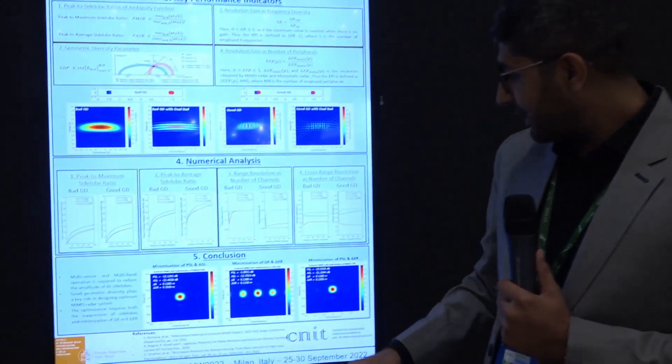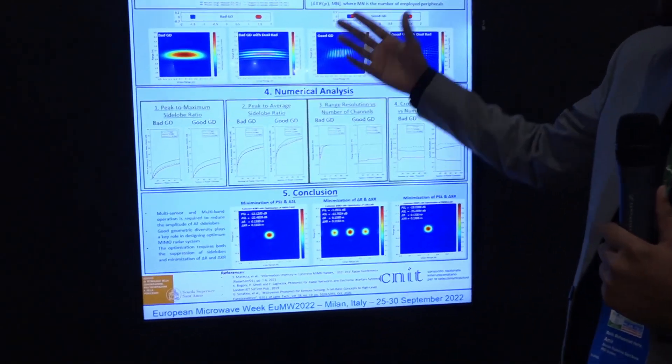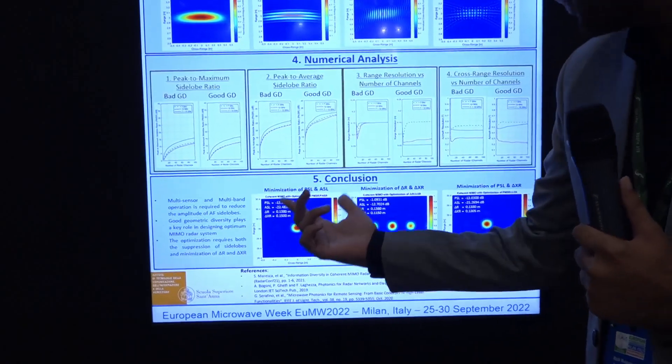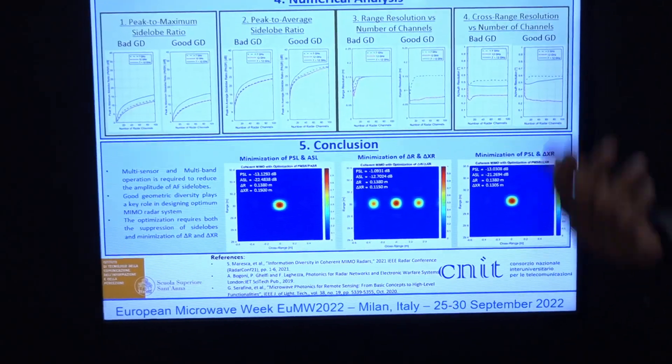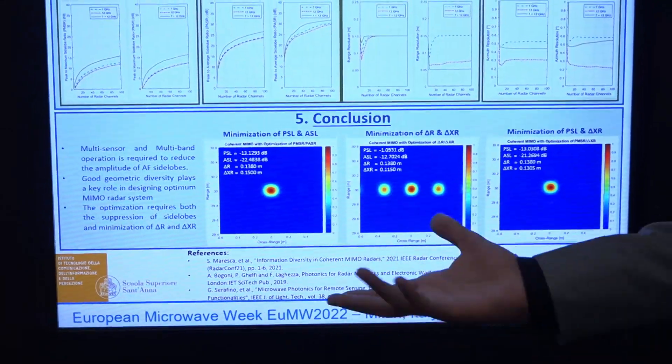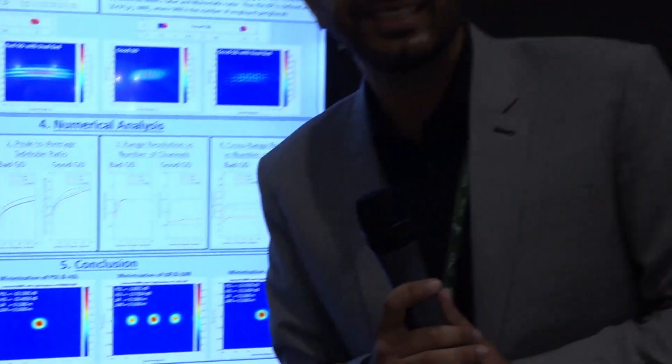And here we have shown that by minimizing the peak side lobe ratio and the range and cross range resolution we are able to achieve the best outcome of the MIMO radar systems. Thank you.